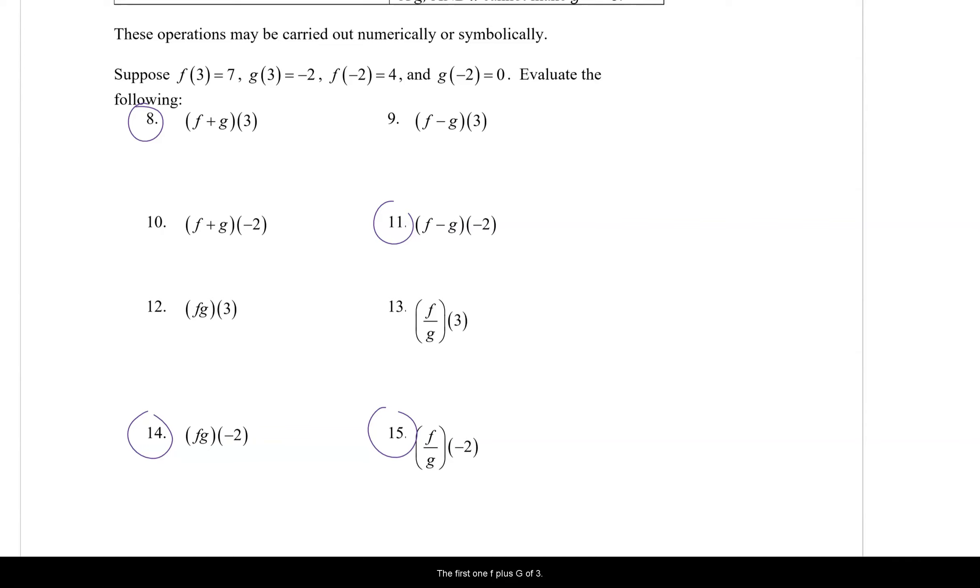In the first one, f plus g of 3, using the notation above, f(x) plus g(x) would be how we would separate f plus g. So I'm going to put in x, but I don't have x. I have 3. So I'm going to put in 3 where the x was. Why is this so great? Well, f(3) I know is 7, and g(3) I know is negative 2. So I can replace f(3) with 7, and g(3) with negative 2, and I get the answer 5 when I add them. So f plus g of 3 is 5.